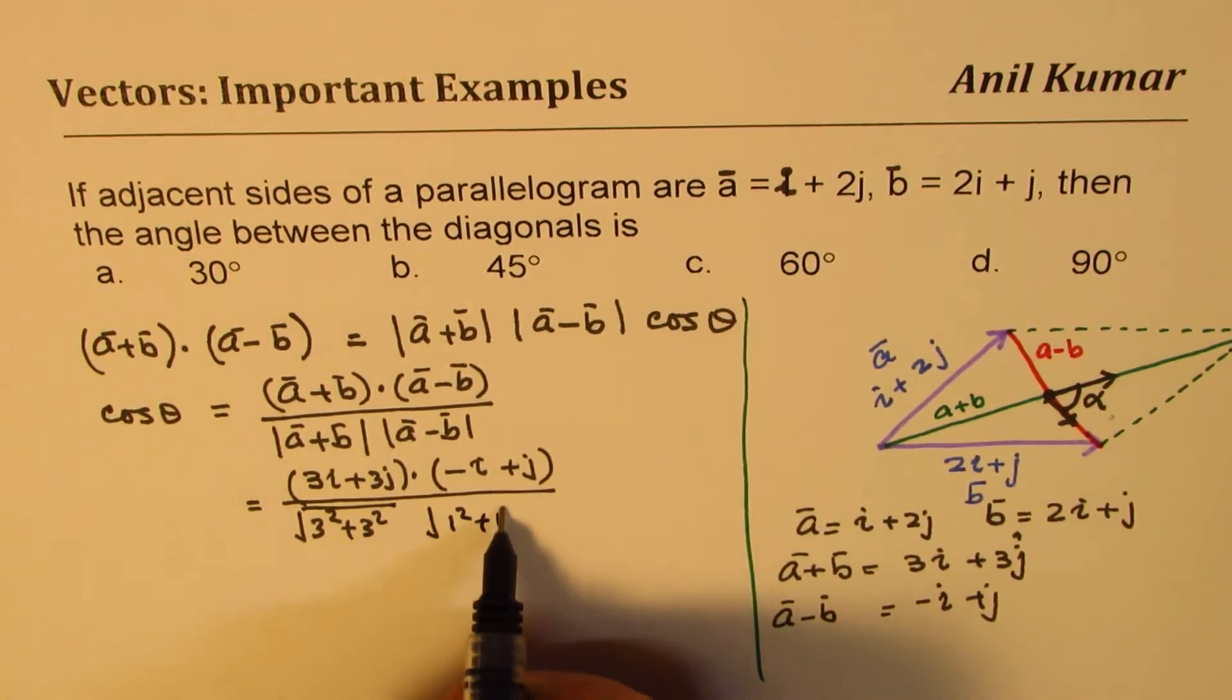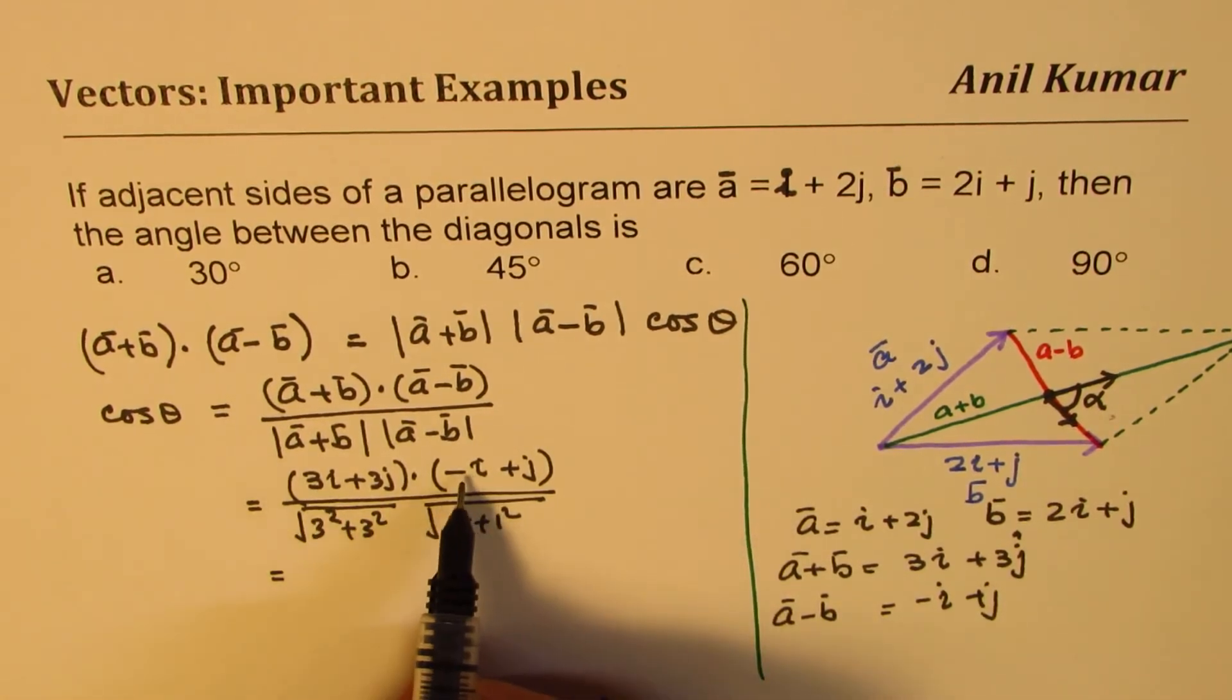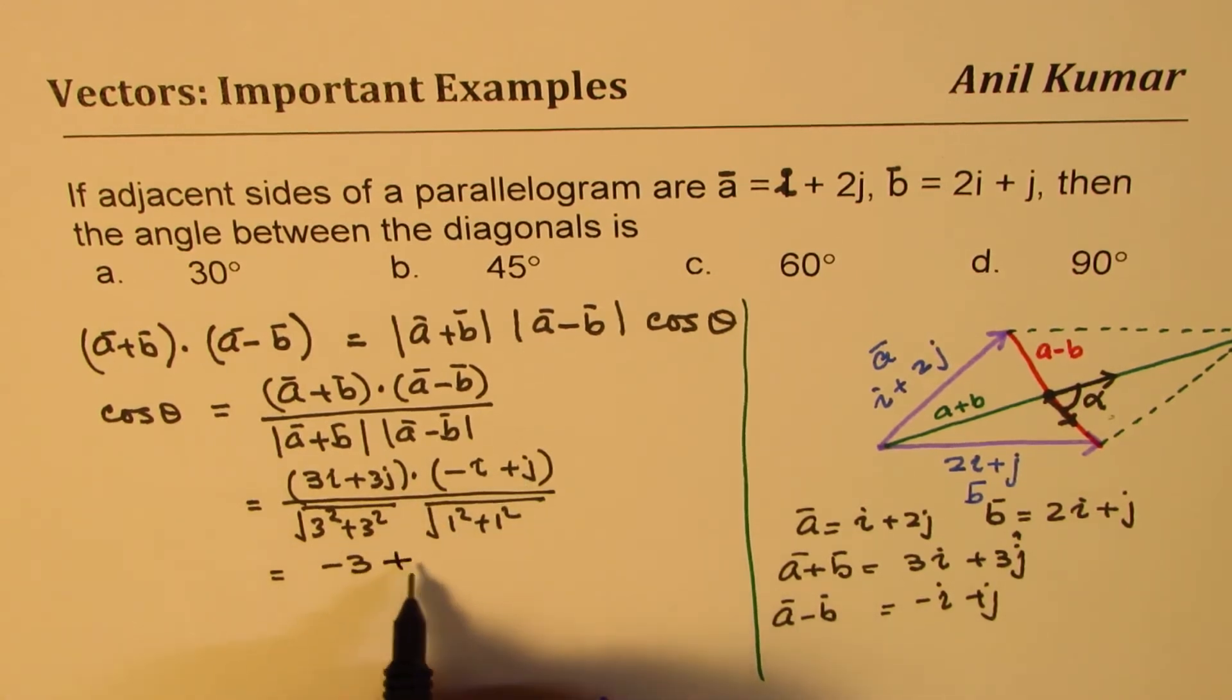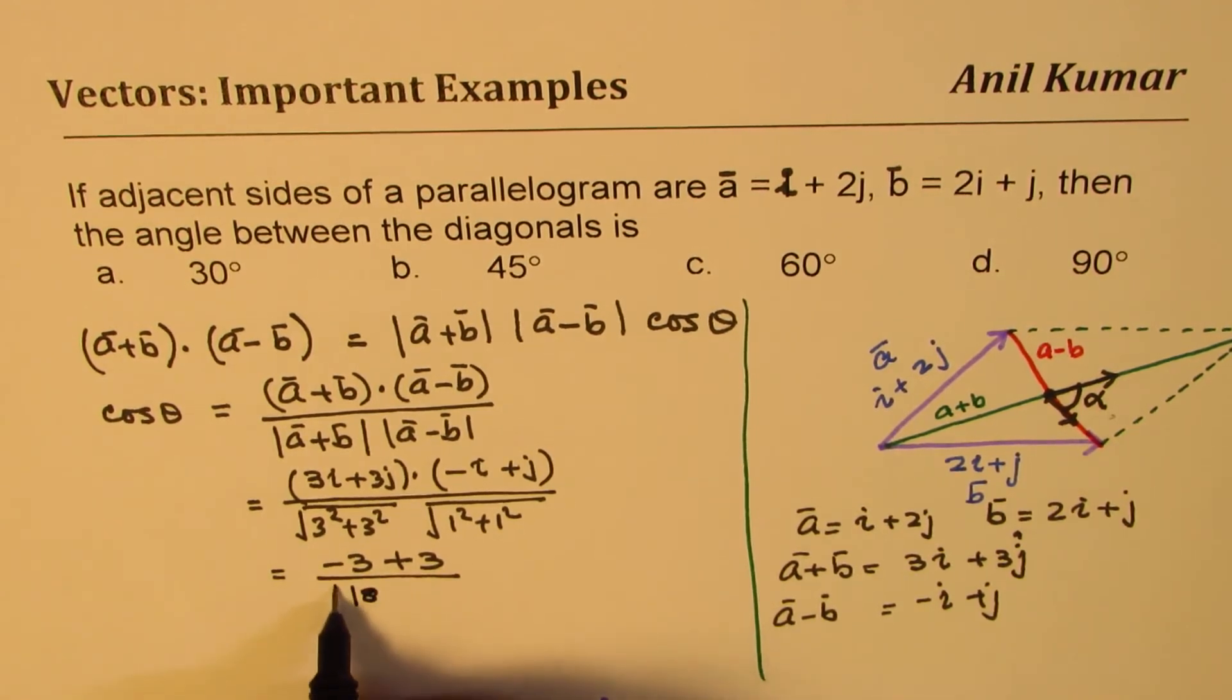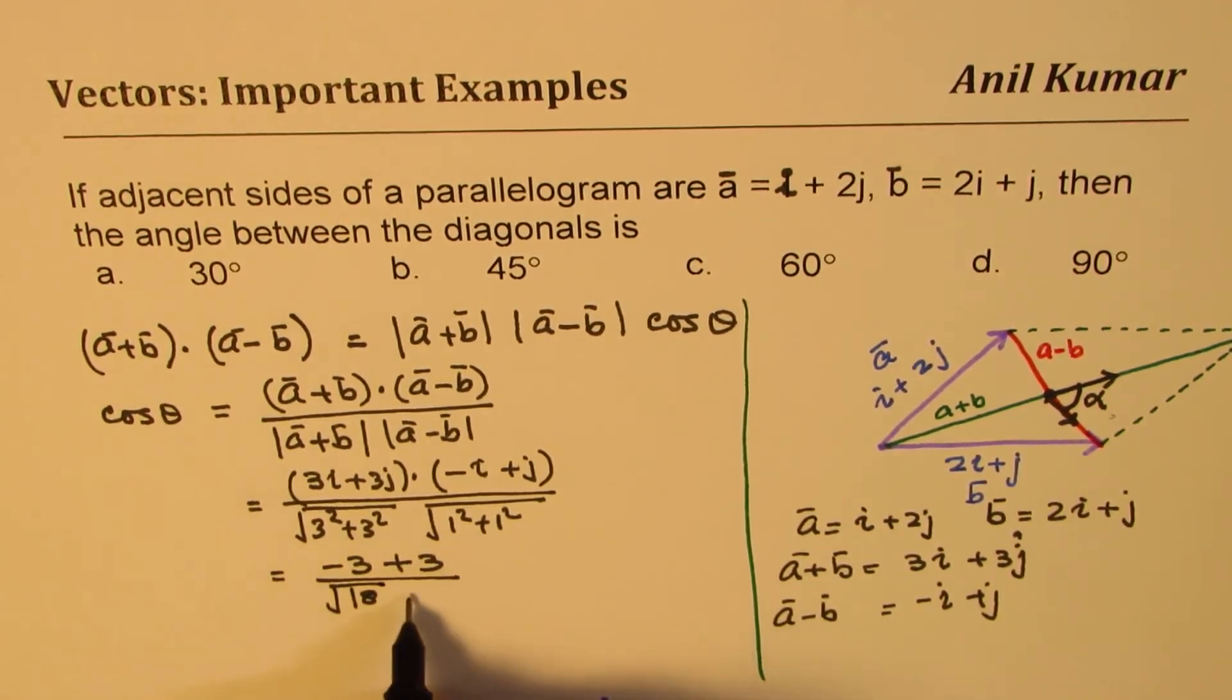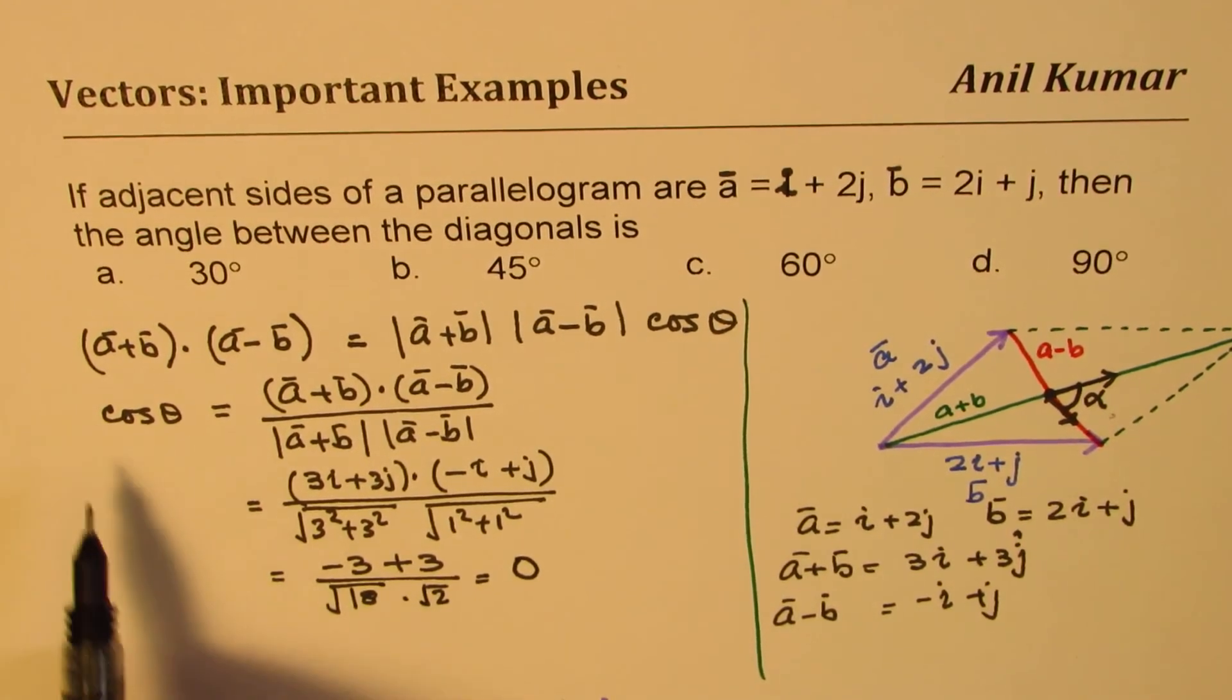So let's do the dot product now. 3 times this will give us -3, and that will give us +3, so the numerator is 0. Here we have √18 and here we get √2. However that is 0, so cos θ equals 0 means θ equals cos⁻¹(0) which is 90 degrees.